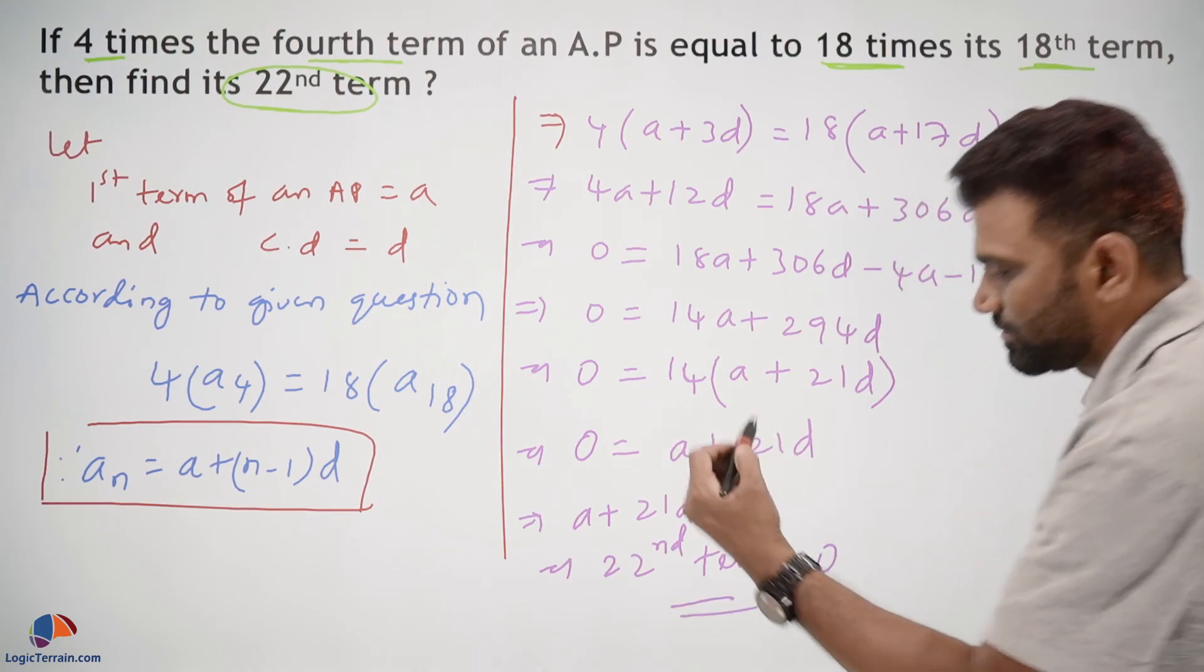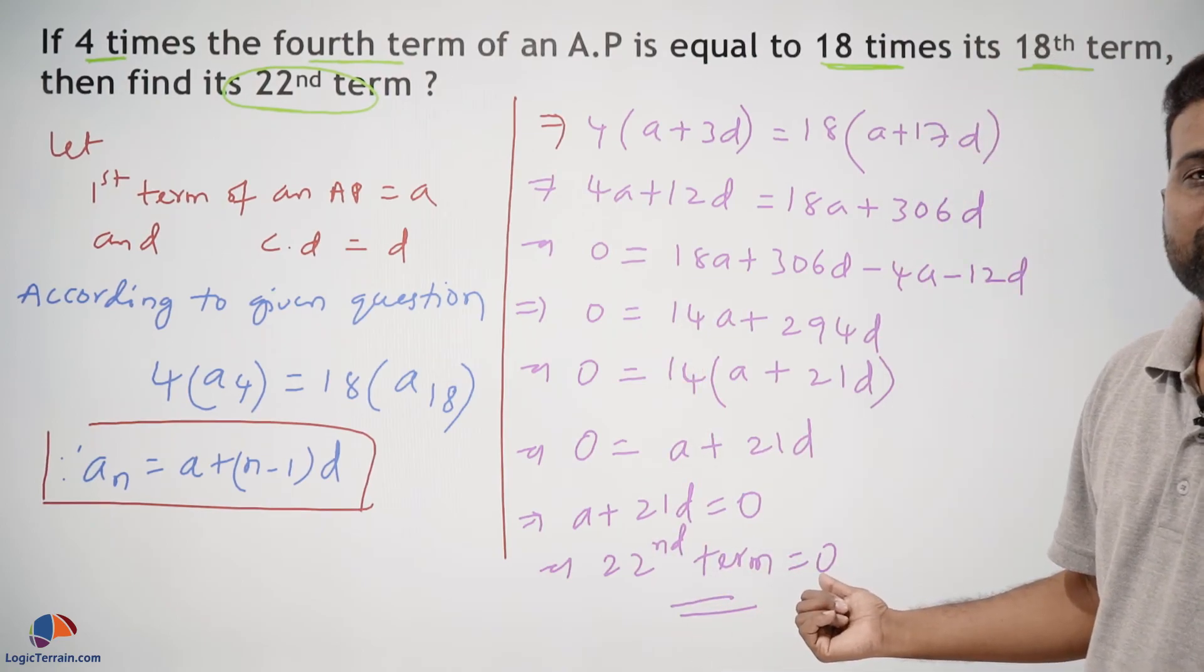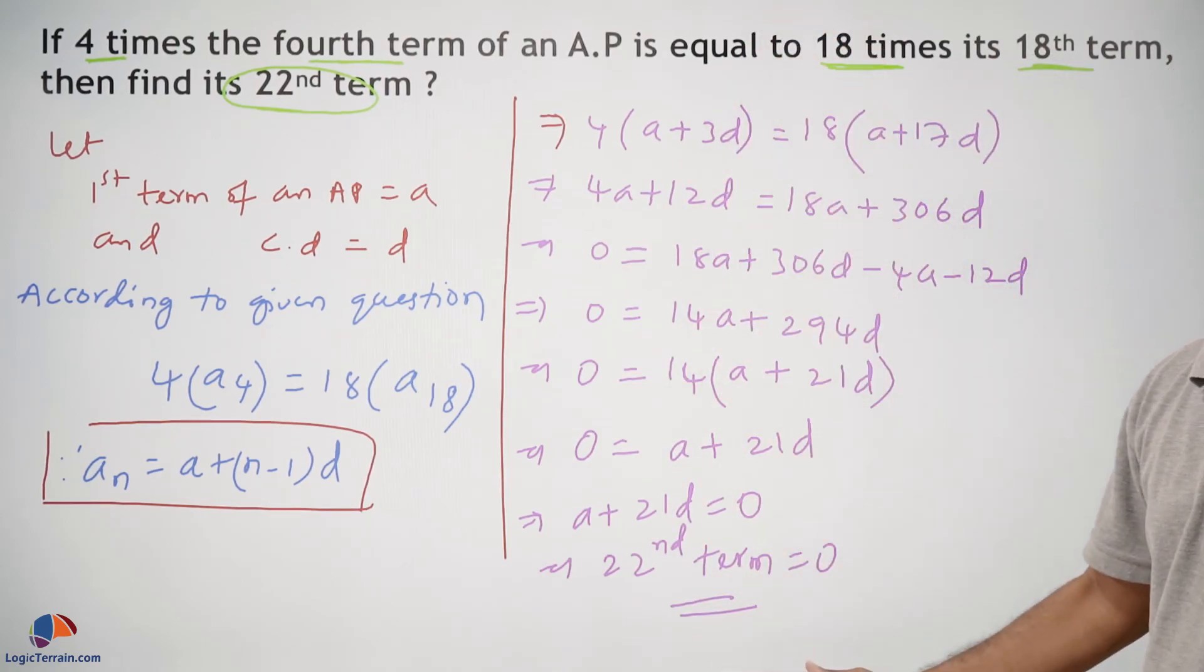This is our final answer. Therefore, its 22nd term is 0. Clear? This is it.